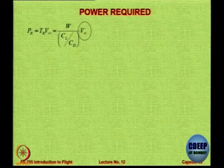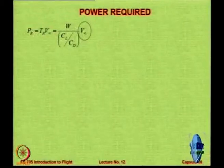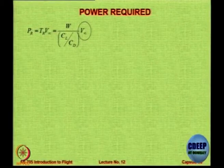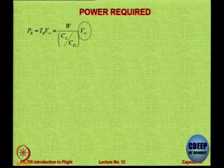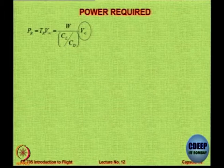Now, can you derive an expression for V∞ in terms of W for level flight? Now do not look at the screen. Please copy down this expression first. Pr is equal to Tr into V∞, which is equal to W upon (CL/CD) into V∞. And V∞ now has to be replaced by an expression that incorporates W and CL for level flight.